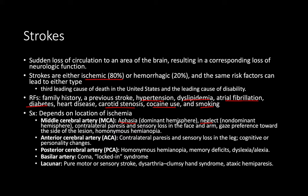With cocaine use, there's a certain drug you shouldn't give — beta blockers. The reason is cocaine works through the norepinephrine adrenergic system. If you block off all the beta receptors — same as with pheochromocytoma — all alpha receptors remain open, causing massive vasoconstriction. So now you have someone with a stroke also having a myocardial event. Beta blockers must be withheld for cocaine users.